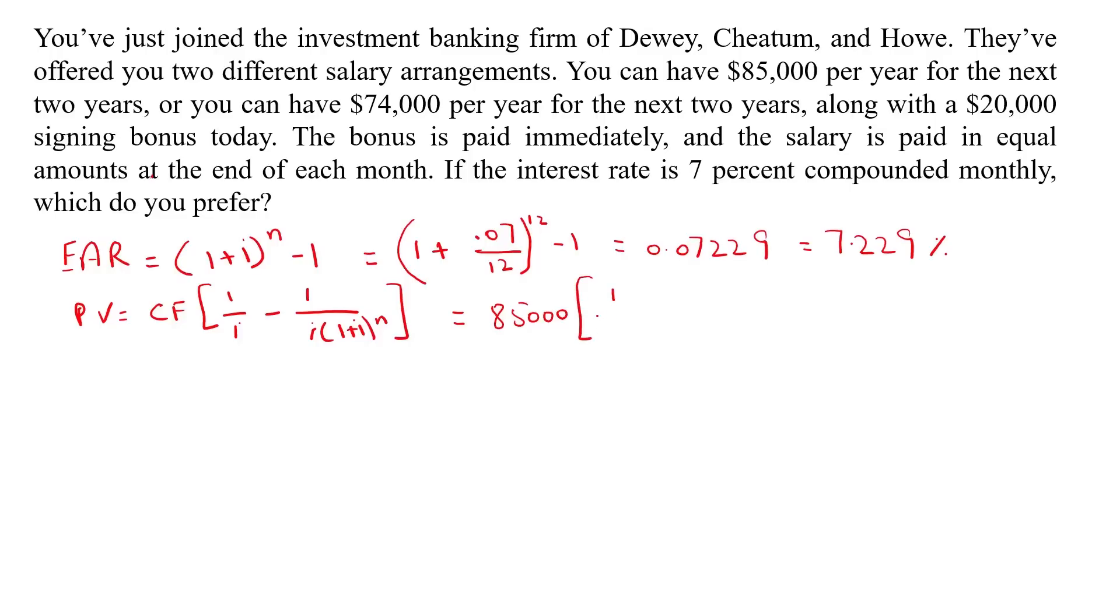1 divided by 0.07229 minus 1 over (0.07229 × 1.07229) raised to power 2.